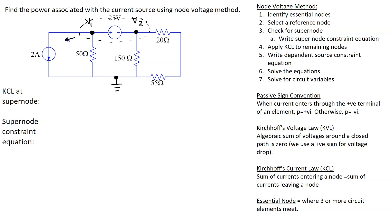Let's assume branch currents flowing away from this super node. Here we have four branch currents that are flowing away from the super node. We are treating v1, v2, and this voltage source as a super node.